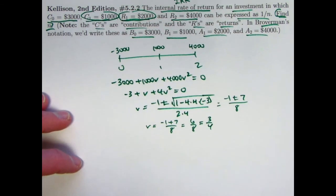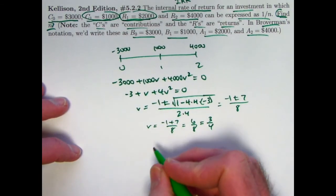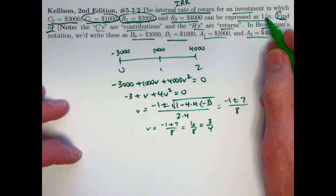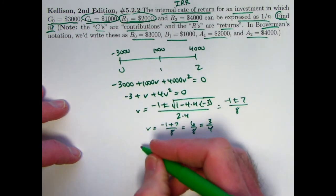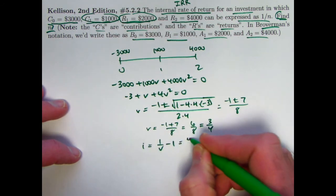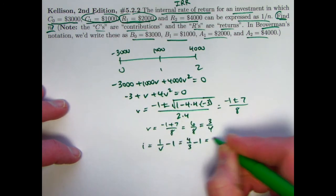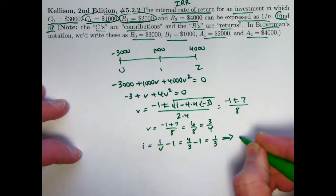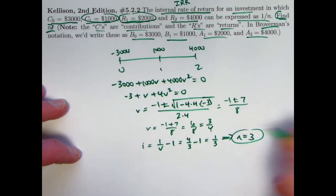That will mean that i is also rational, and we'll be able to find n. I can be found as 1 over V minus 1, so that would be 4 thirds minus 1, which is 1 third, and therefore n is 3, and that is the answer.